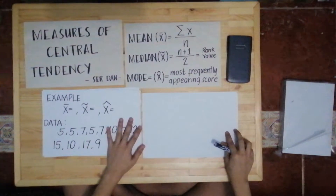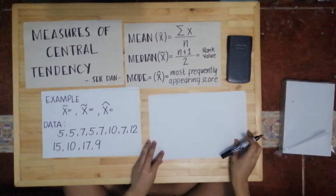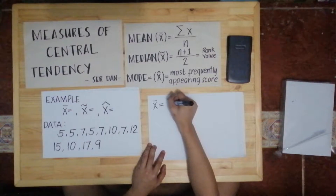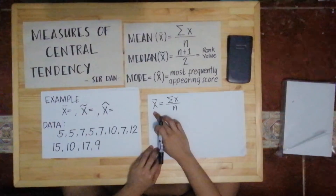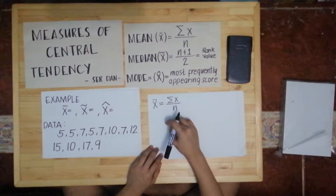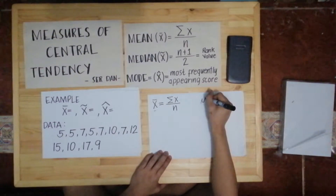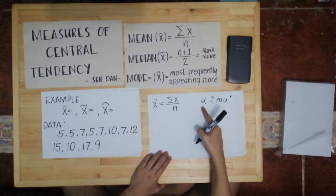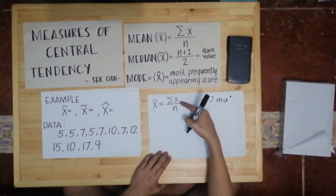First, let's get the mean. The symbol of the mean is x-bar. The mean is the most common measure of central tendency — we also call it the average. We distinguish between sample mean and population mean. The population mean uses the symbol mu. The sample mean uses x-bar, and that is what we will use here.